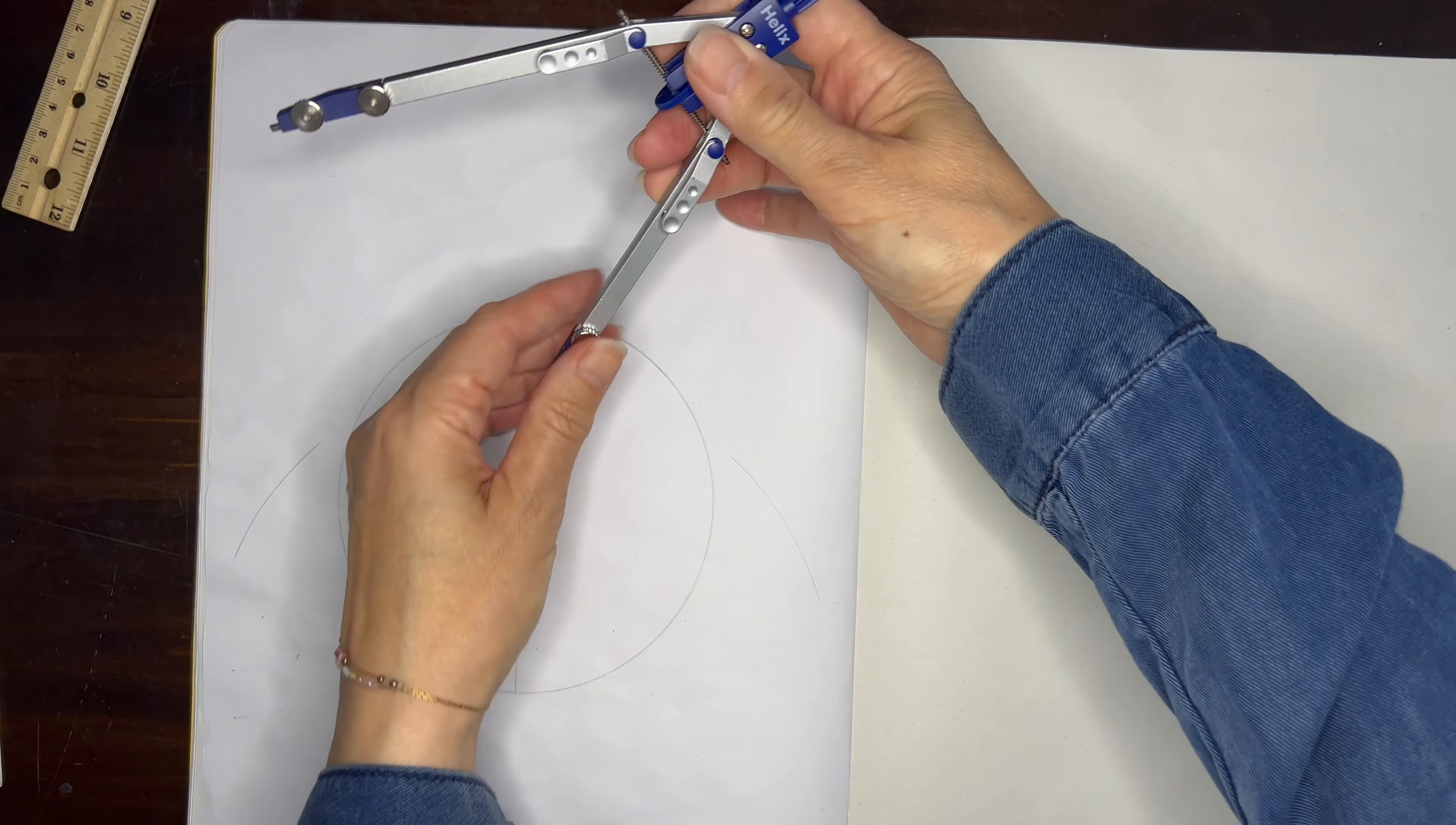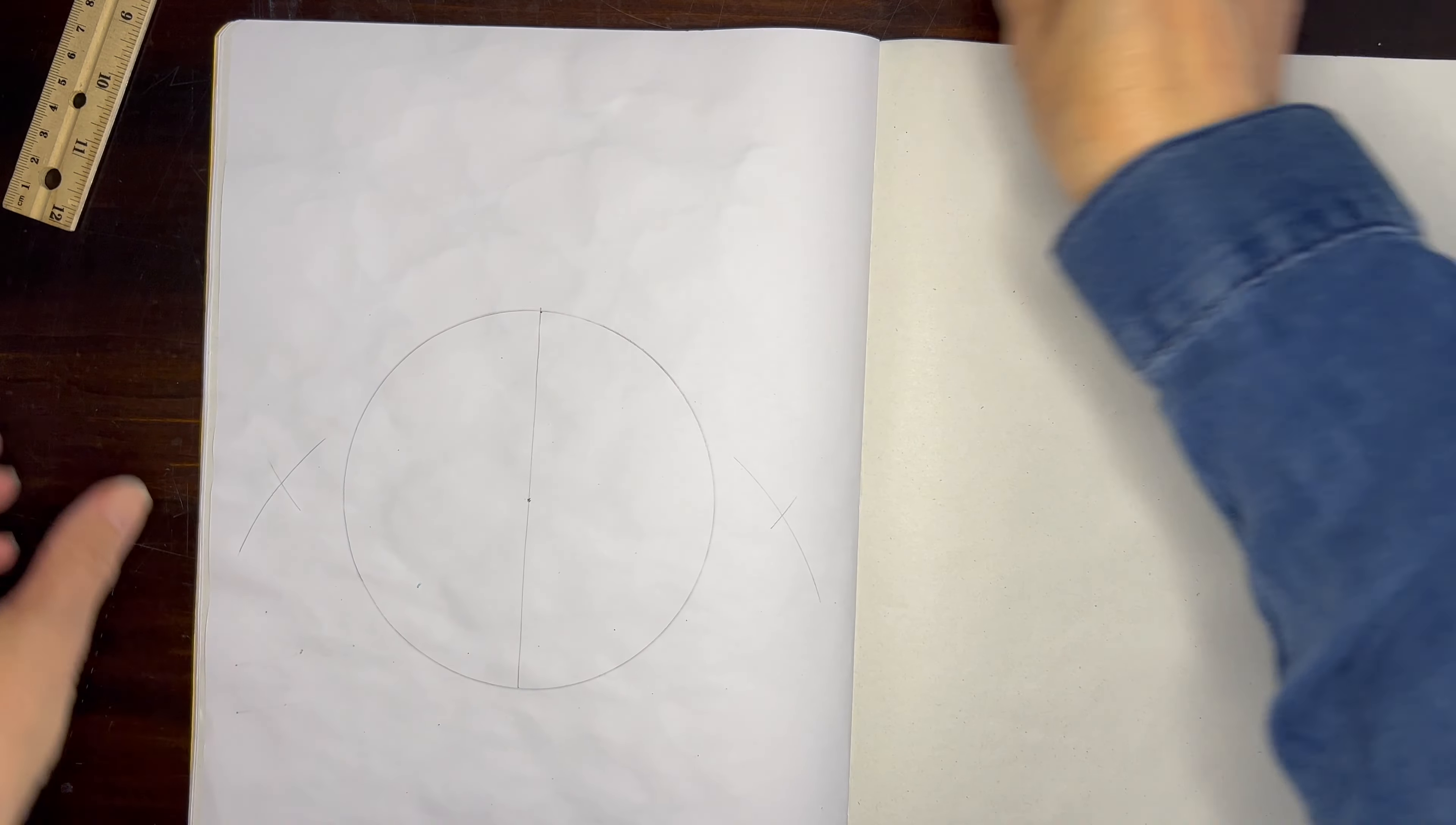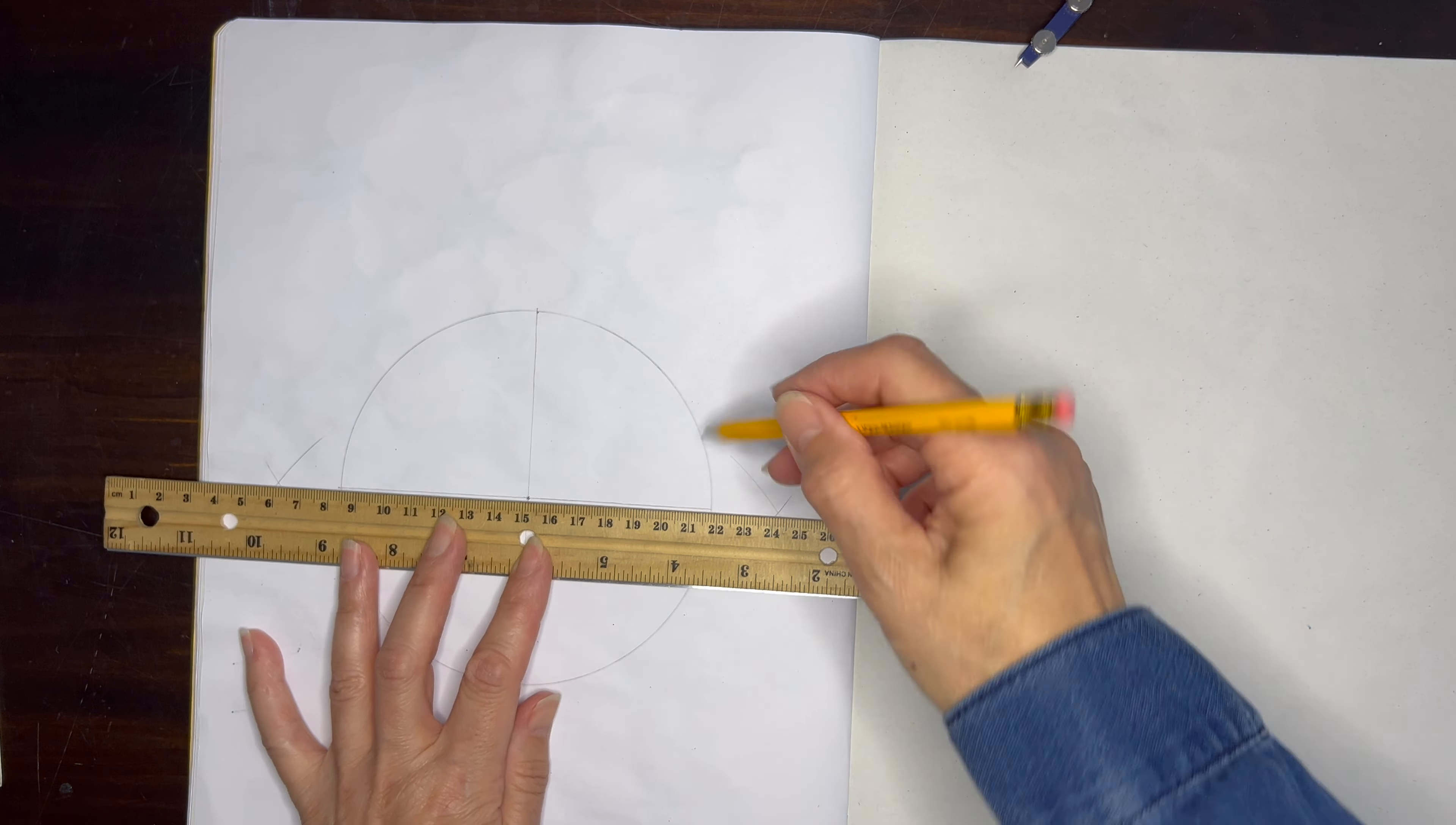I'm going to reposition the point of my compass to the top of the diameter and once again I'm going to swing on the right and left side. You can see where those arcs cross each other. I'm taking my ruler and once again I'm going to align through the center and through both of those arcs on either side and draw a line right through the center.